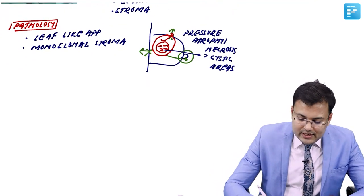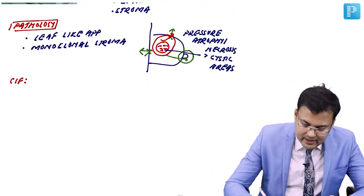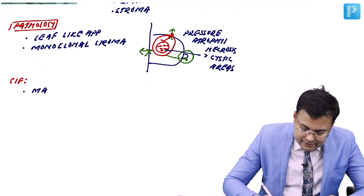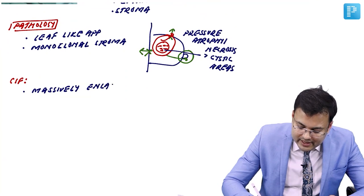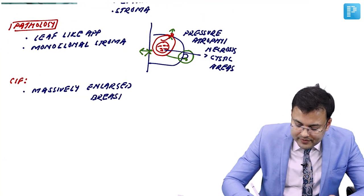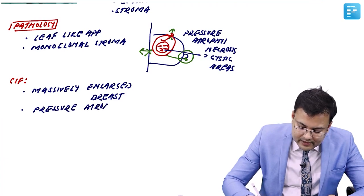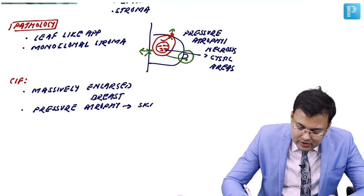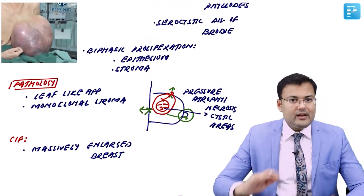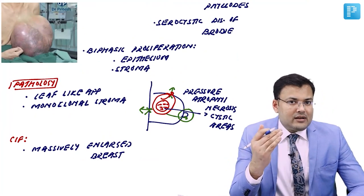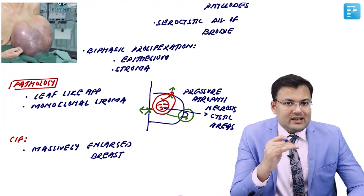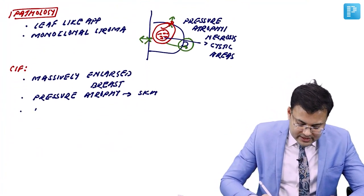Clinical findings: the affected breast is massively enlarged due to rapid growth. There can be pressure atrophy of the overlying skin. The appearance of the tumor is bosselated — similar to a lipoma, which has a bosselated surface.